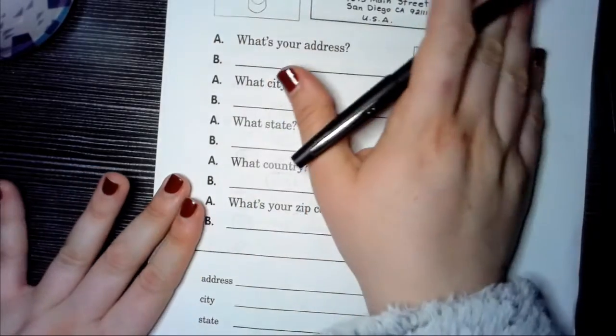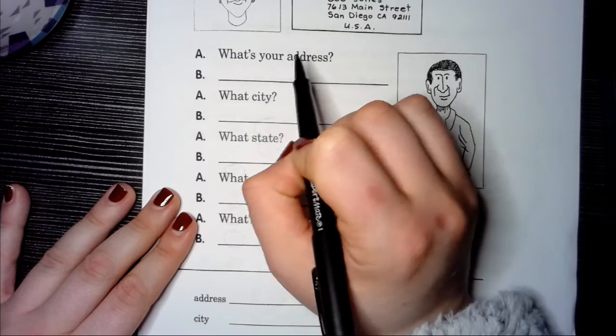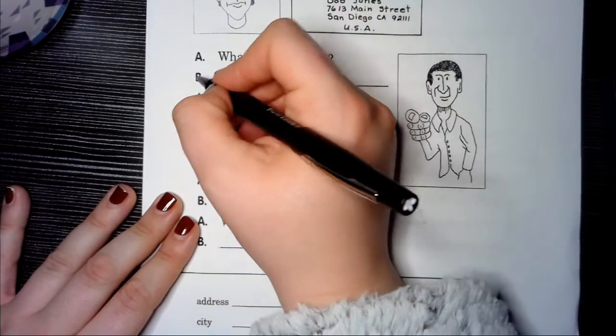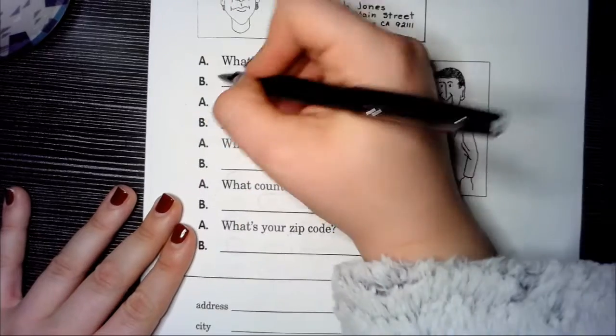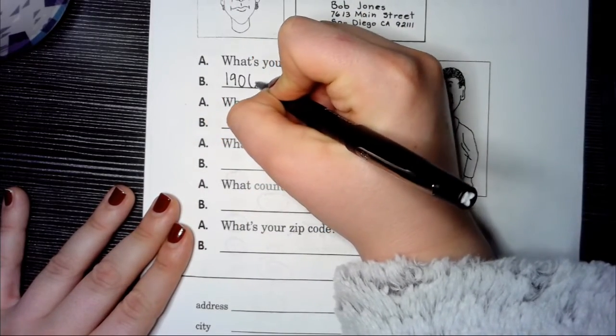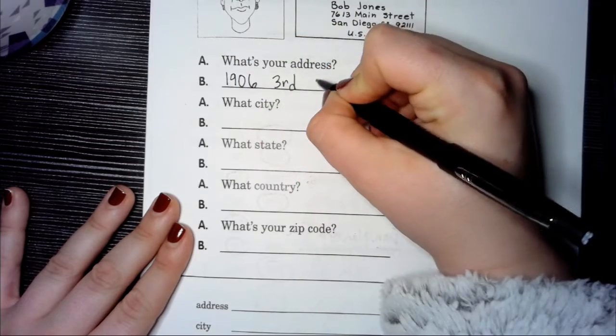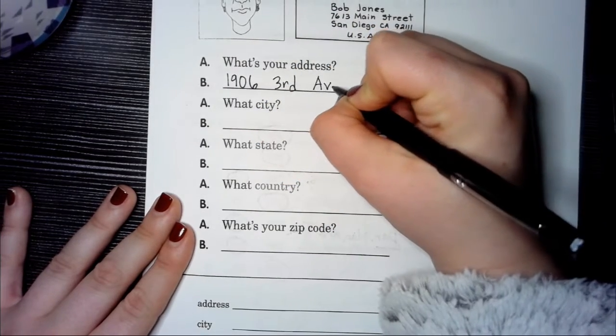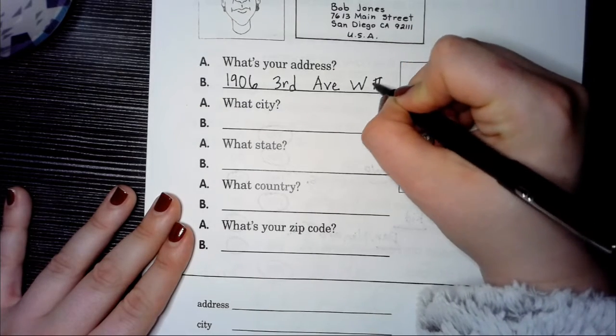So I'll show you. A: What's your address? B: You write your address. So for me, 1906 3rd Avenue West, I'm apartment number two.